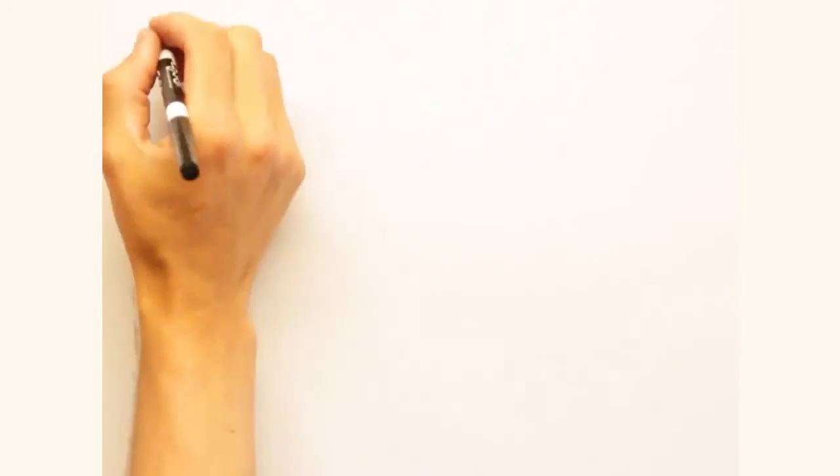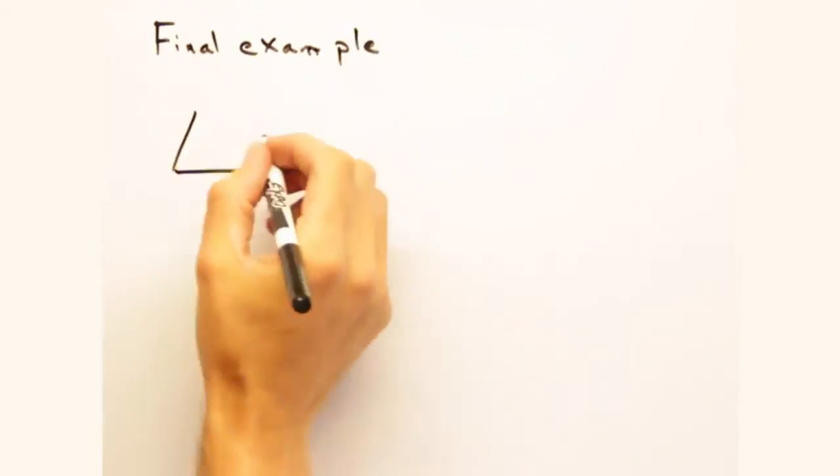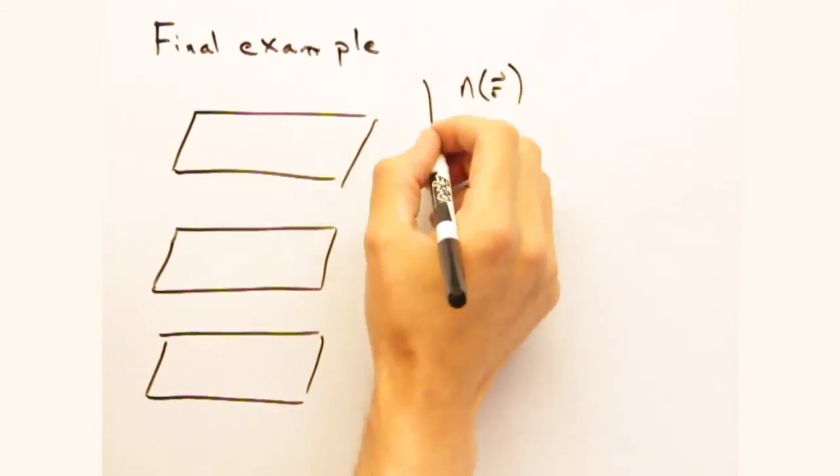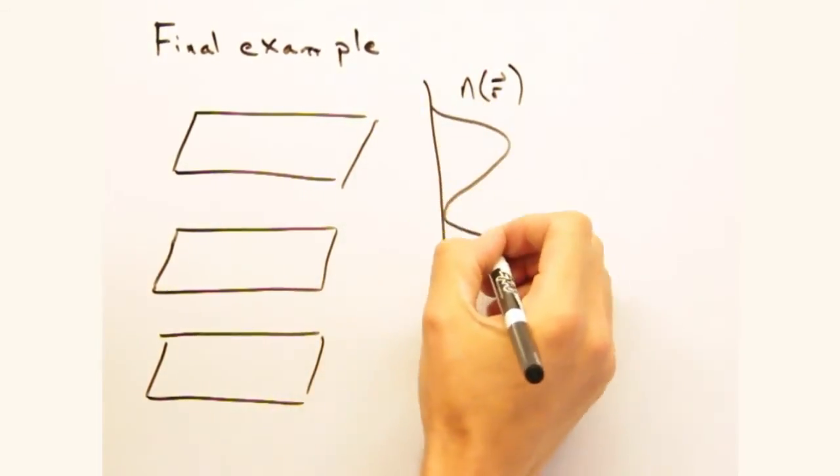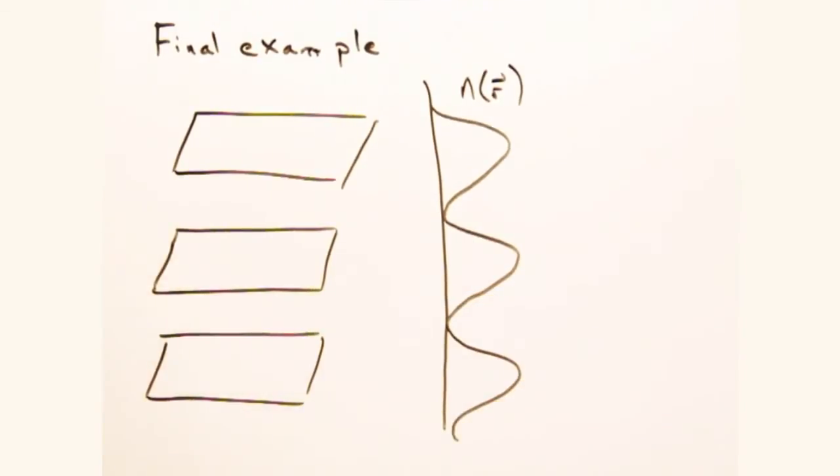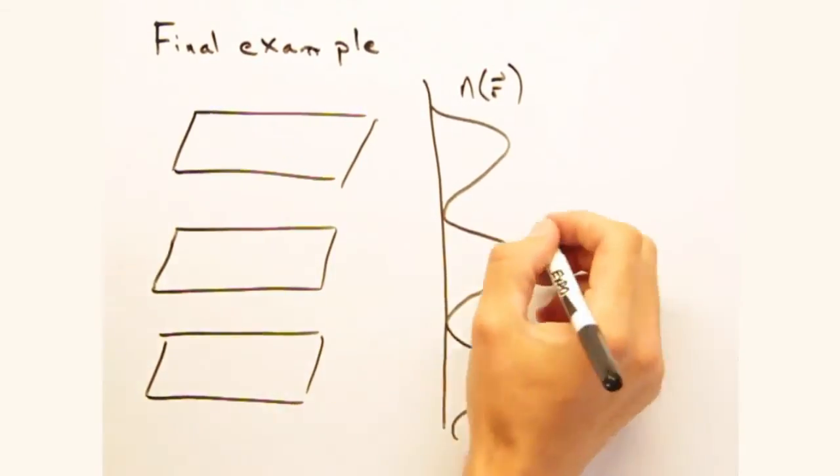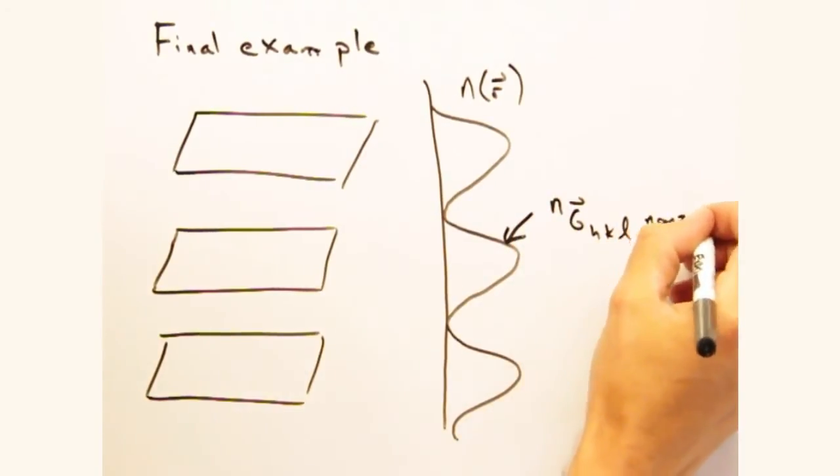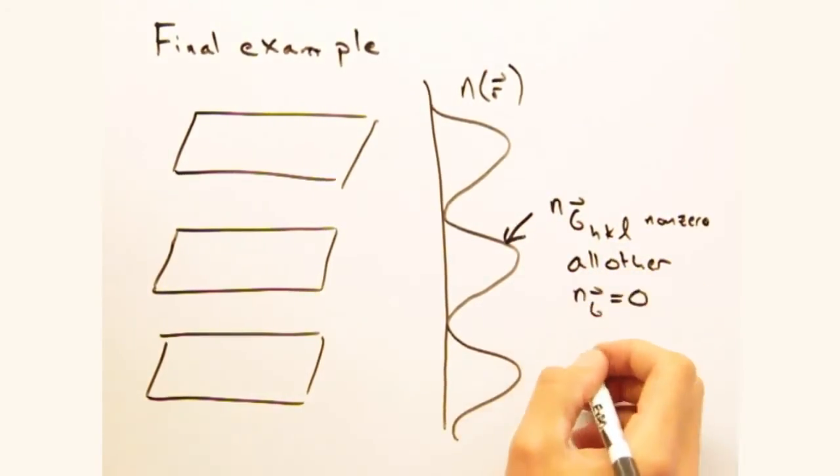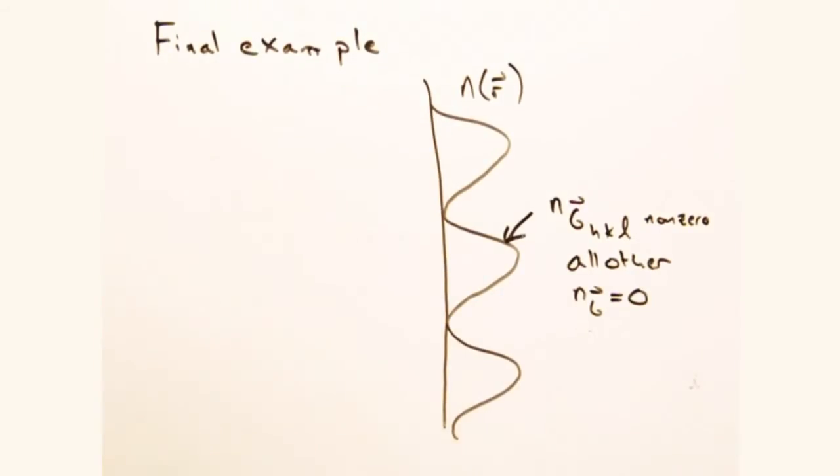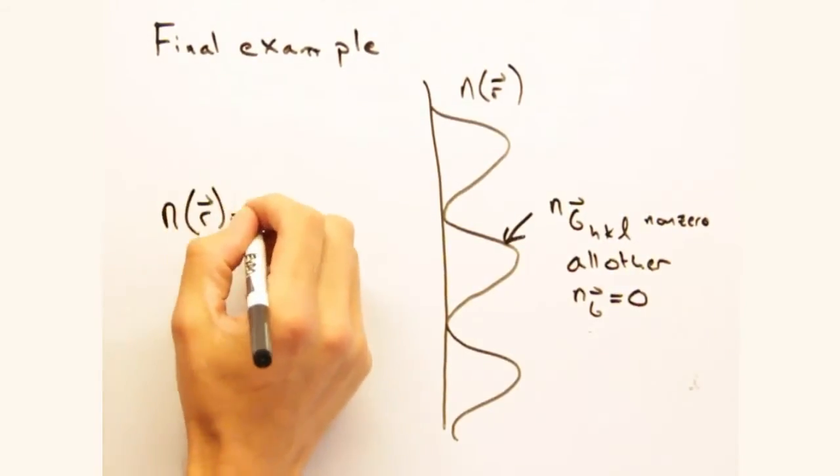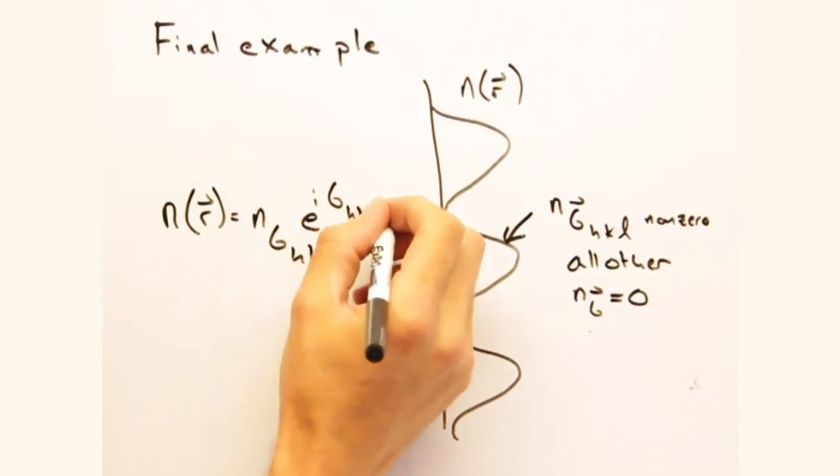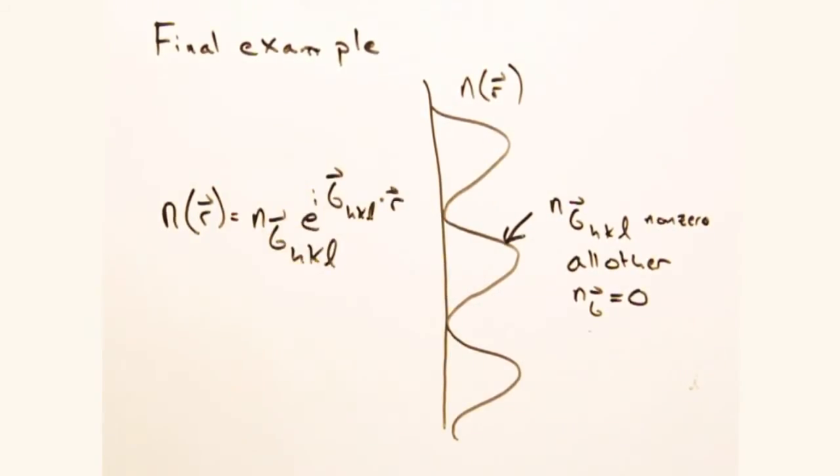Until then, let's look at a simple example. Imagine layers of graphene stacked like so in the g3 direction. We can imagine then that to first order, our n of r can be approximated as a sine wave. So since a simple sine wave can be built out of one wave, all my Fourier coefficients but one will be zero. Yeah, so we can then describe the g3 periodicity of this graphite stack in terms of a single wave vector with an associated Fourier coefficient, n sub g sub hkl.